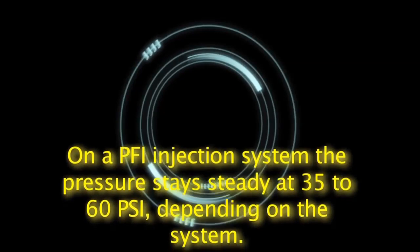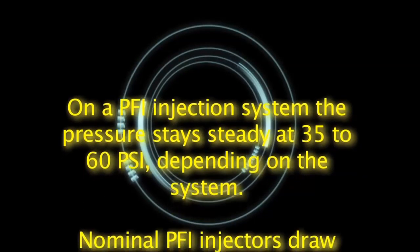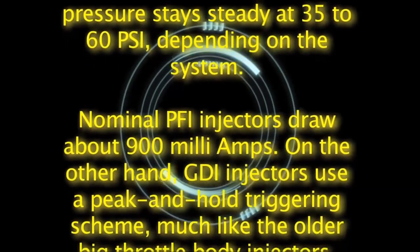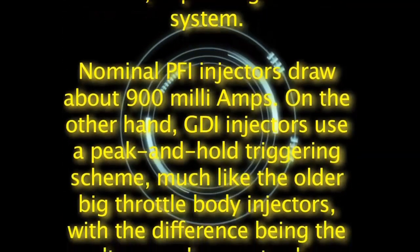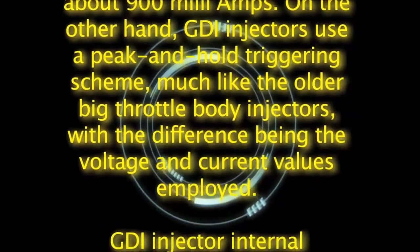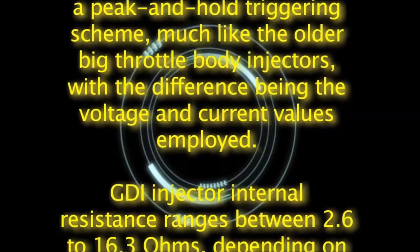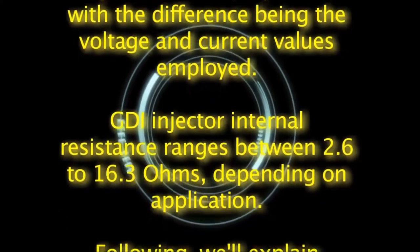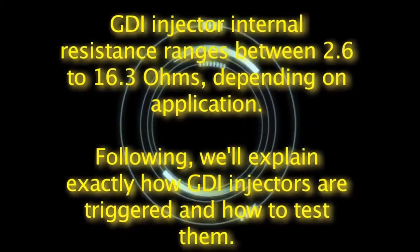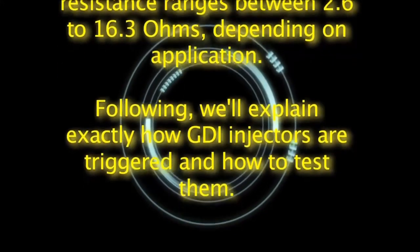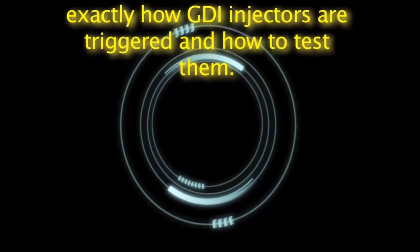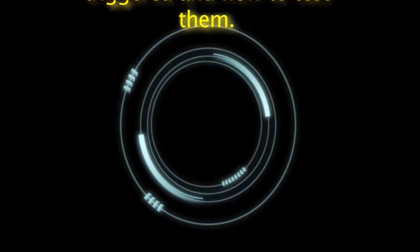Nominal PFI injectors draw about 900 milliamps. On the other hand, GDI injectors use a peak and hold triggering scheme, much like the older big throttle body injectors, with the difference being the voltage and current values employed. GDI injector internal resistance ranges between 2.6 to 16.3 ohms, depending on application. We'll explain exactly how GDI injectors are triggered and how to test them.